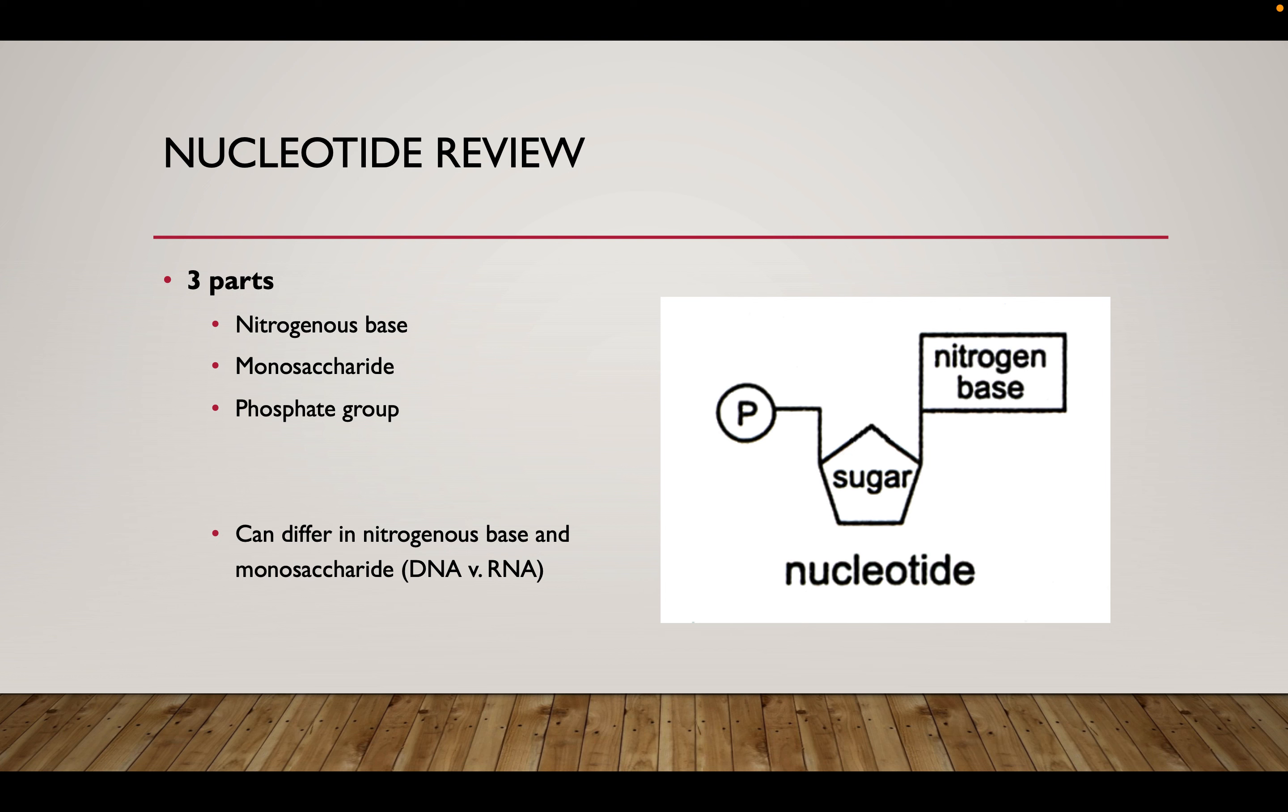So we'll now get into talking briefly about nucleic acids, DNA and RNA. So we have nucleotides. Nucleotides are the monomer, the building block of nucleic acids. Nucleotides are going to be made of three primary parts, all of them, and they'll differ slightly in their nitrogenous base, and they can also differ in their sugar between DNA and RNA. So you have a nitrogenous base, you have a monosaccharide, and you have a phosphate group.